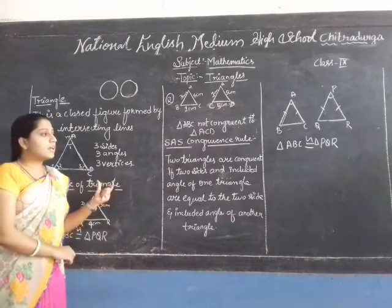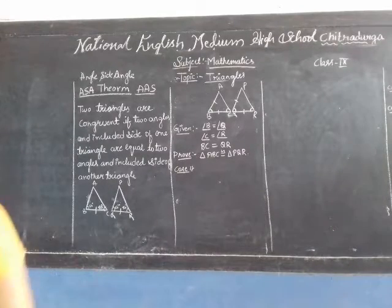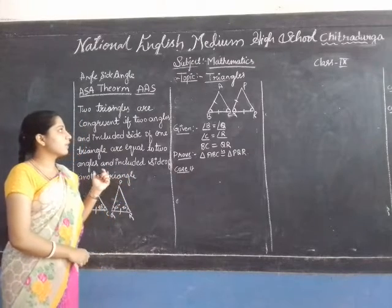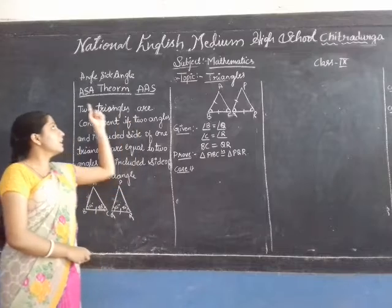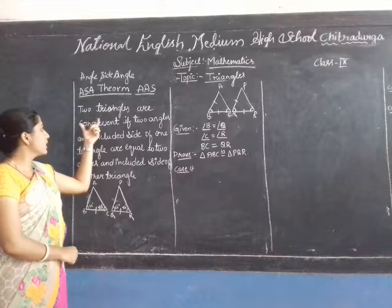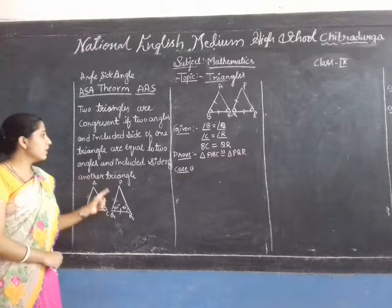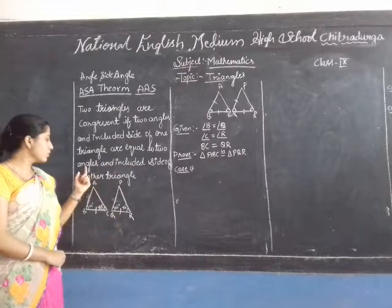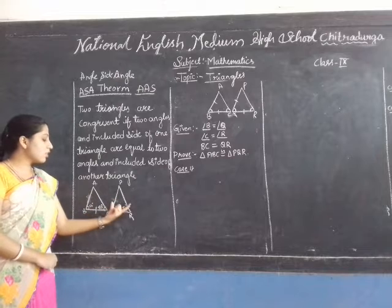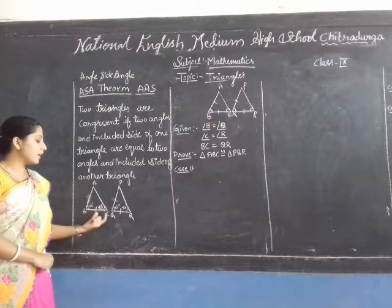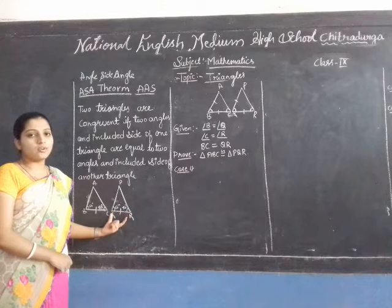Now let's move on to the ASA rule — that is, Angle Side Angle rule. This is the ASA congruence rule, also called the ASA theorem. The statement is: two triangles are congruent if two angles and the included side of one triangle are equal to the corresponding two angles and included side of another triangle.